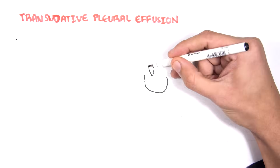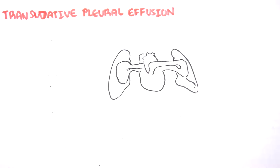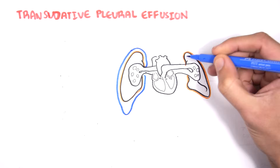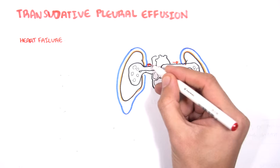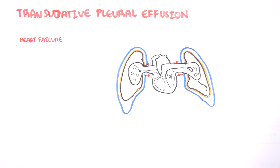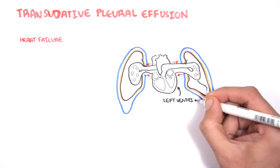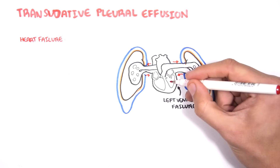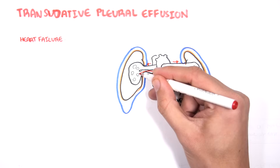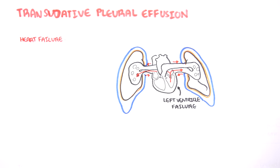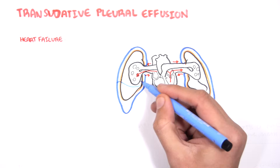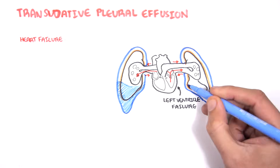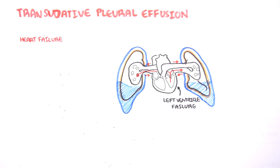Let's now look at some different causes of pleural effusions specifically in more detail, beginning with transudative pleural effusions. Looking at heart failure: normally the pulmonary arteries pump blood to the lungs where it will return to the left side of the heart. Imagine you have left ventricular failure, the main cause of heart failure. This causes fluid to go backwards to the pulmonary vein and pulmonary capillaries. When fluid goes backwards, it will result in pleural effusions, bilaterally.